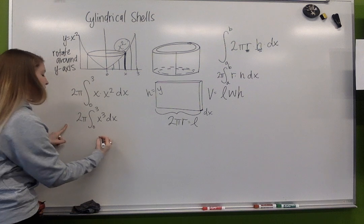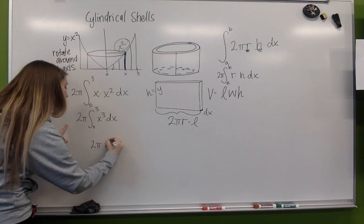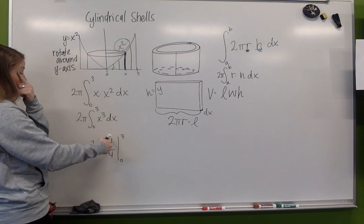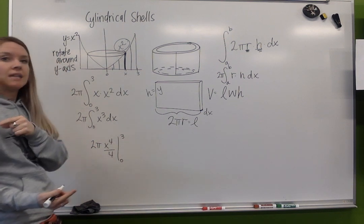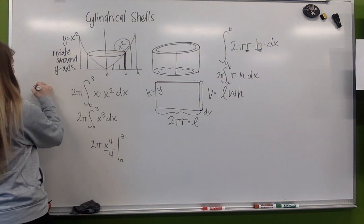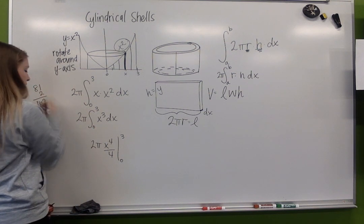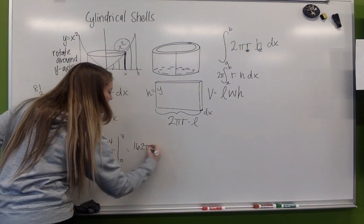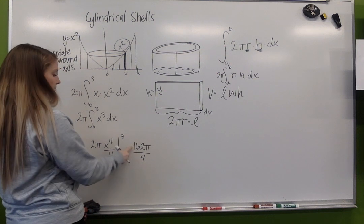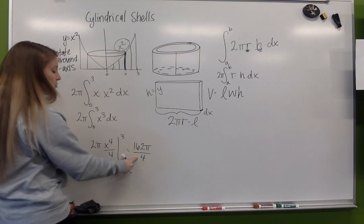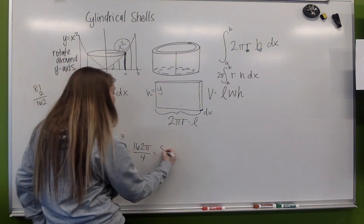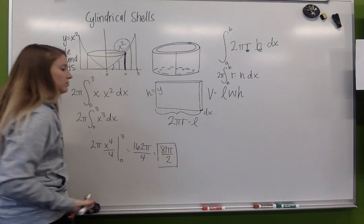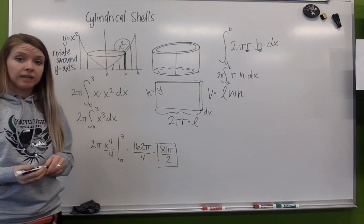Anti-derive this. I'm going to end up getting x to the 4th over 4 from 0 to 3. 3 to the 4th is 81. 81 times 2 is 162 pi over 4. And those are both divisible by 2. So we're going to get 81 pi over 2. That's it.